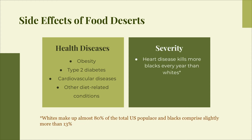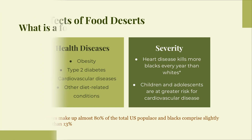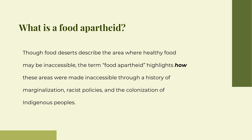As African Americans are more likely than other populations to live in food deserts, heart disease kills more Black people every year than whites. Additionally, children and adolescents living in food deserts are at greater risk for cardiovascular disease due to the increased prevalence of obesity in those communities. Though food deserts describe the area where healthy food may be inaccessible, the term food apartheid highlights how these areas were made food deserts through a history of marginalization, racist policies, and the colonization of indigenous peoples. It is from this colonial and oppressive history that communities of color have been purposely made into places where healthy food is inaccessible, and so food sovereignty is how we address this history of colonization and oppression.